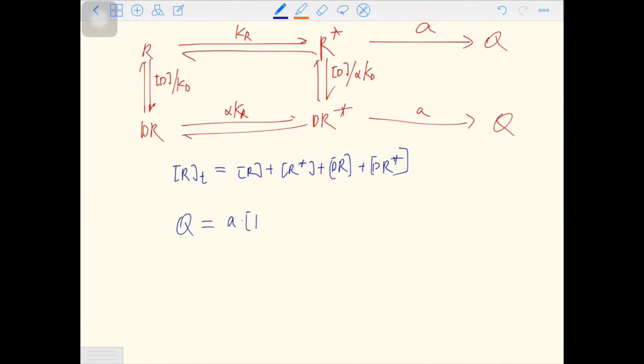a times R star plus a times DR star. To derive the final form of this Q, you have to do the derivation in two steps. The first step is to isolate R star, meaning that you have to change every term in this equation of state into R star and D plus other constants.